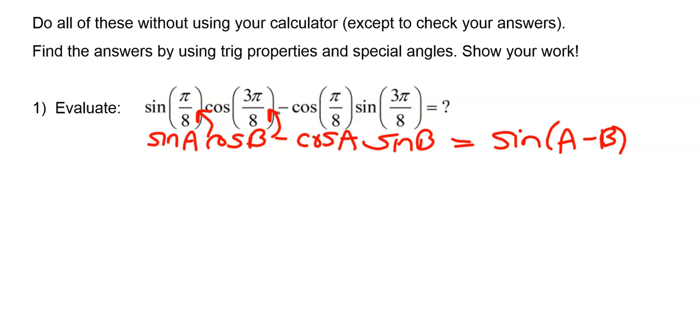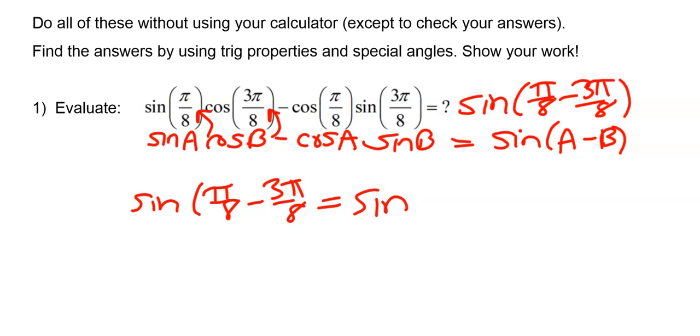So I could write this then, this whole thing as sine of pi over 8, or sorry, minus 3 pi over 8. So sine of pi over 8 minus 3 pi over 8. Okay, so what is sine of pi over 8 minus 3 pi over 8? Well, that would be sine of negative 2 pi over 8, which is sine of...